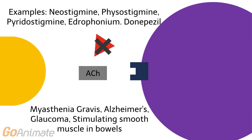These drugs are used to treat myasthenia gravis, Alzheimer's disease, glaucoma, and for stimulating smooth muscle contractions in the bowel.